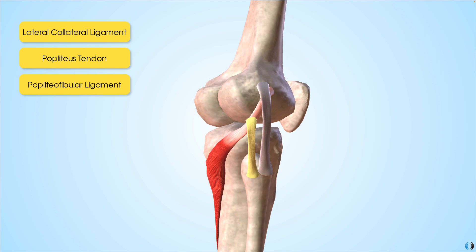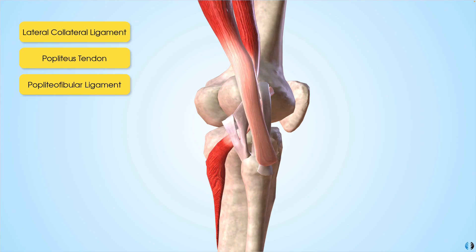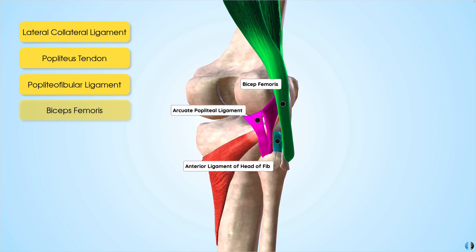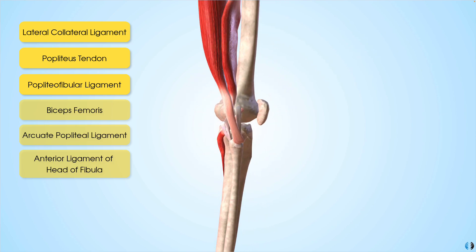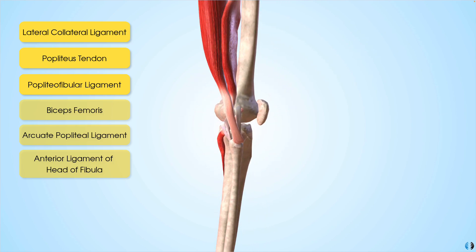Whilst those are the three main structures involved, there are other elements to consider including the biceps femoris tendon, one of the hamstring muscles, as well as various other smaller ligaments and capsular components that also contribute to the stability and function of the posterolateral corner.